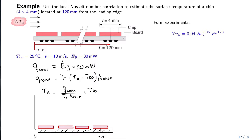This example consists of an electronic board, represented here, that contains several chips. We are interested in computing the temperature of a chip located at 120 mm from the leading edge. The 120 mm are measured to the halfway of the chip, and the chip dimensions are 4 mm by 4 mm. The chip consumes 30 mW of energy, and that energy is dissipated through convection to the air.